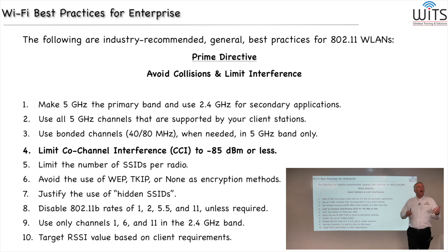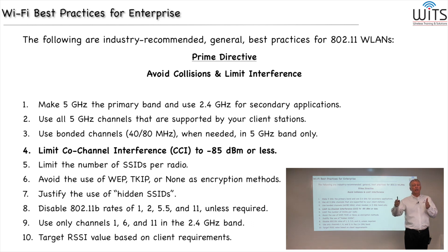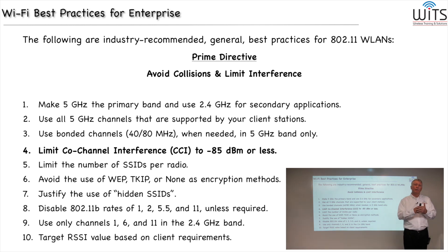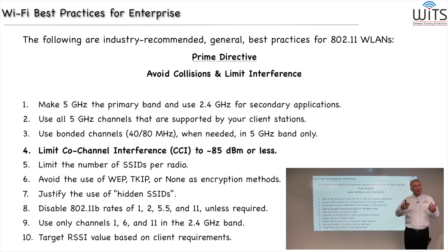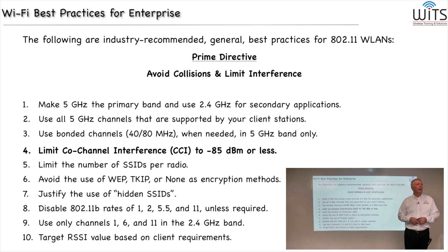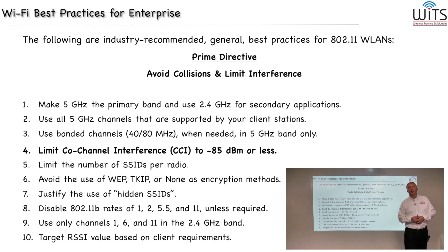With adjacent channel interference, when we listen before we talk — say we're configured on channel 3 and another access point is on channel 6 — we don't hear each other because we're not on the same channel. So there's no built-in mechanism to prevent both talking at once, causing collisions. Collisions are destructive. Whereas with co-channel interference, more devices means fewer opportunities to transmit, which translates to less performance — but not because of collisions, because of politeness. It corrodes your performance but doesn't destroy it, like adjacent channel interference does.